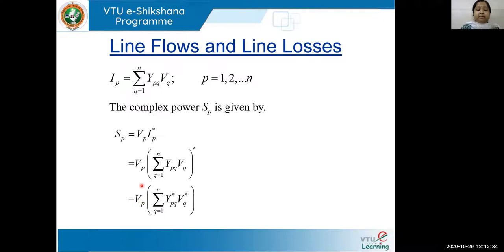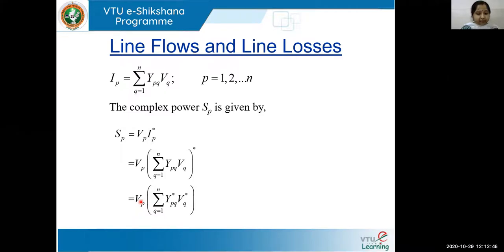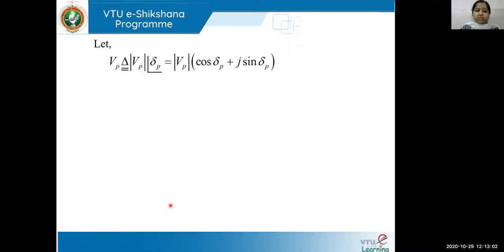In this equation we have VP and VQ. VP can be represented in polar form as magnitude |VP| at angle δP. Similarly, VQ will be |VQ| at angle δQ. YPQ equals GPQ plus jBPQ — this is how we represent it in rectangular form.